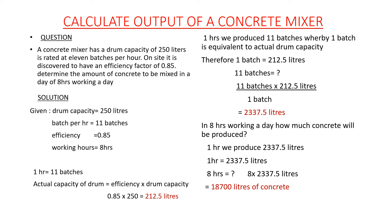The actual drum capacity is the efficiency times the drum capacity. We need the efficiency factor because that drum cannot produce 250 liters on site — that is why on site it has been discovered to have an efficiency of 0.85. So to find the actual drum capacity: 0.85 times 250, which gives us 212.5 liters. This is the actual capacity of that drum.